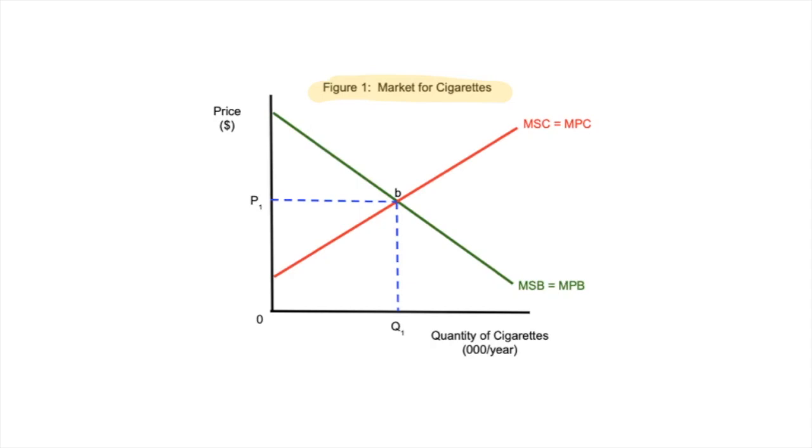So the thing is, with negative externalities of consumption, the way that you account for the extra cost to society as a result of me smoking the cigarettes is you express it as an outward movement of one of those two curves right there.